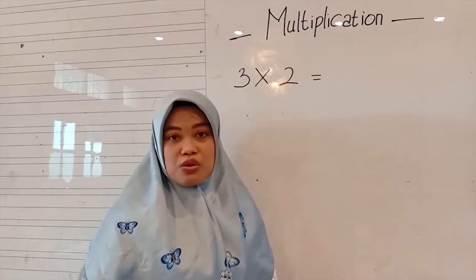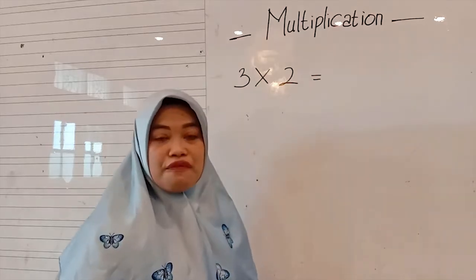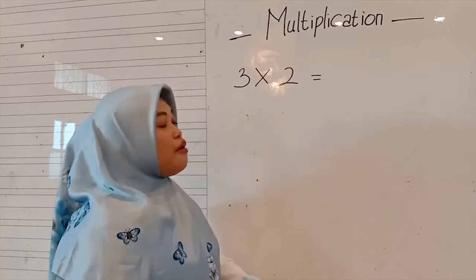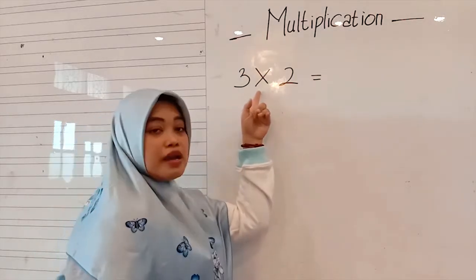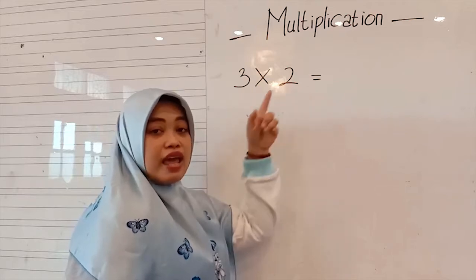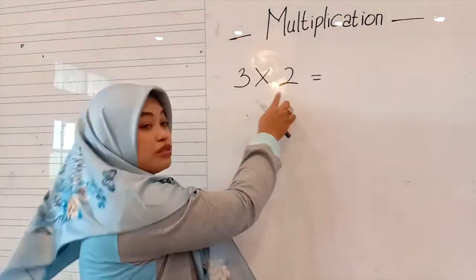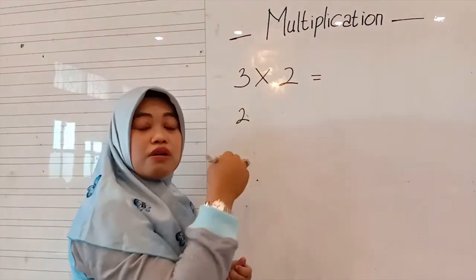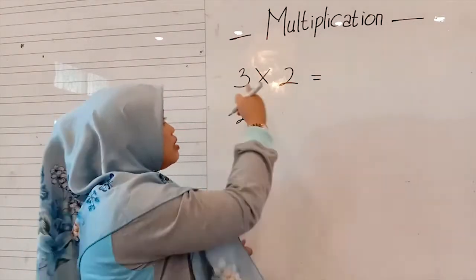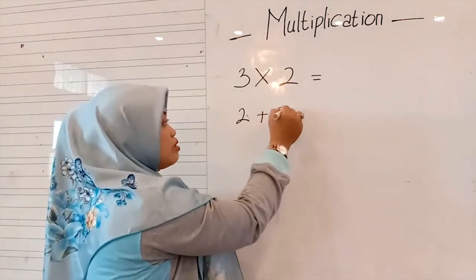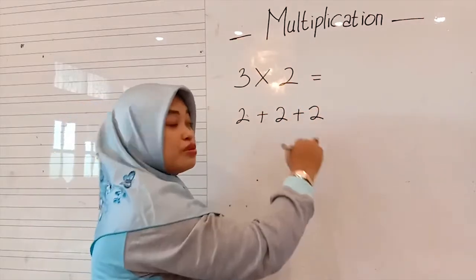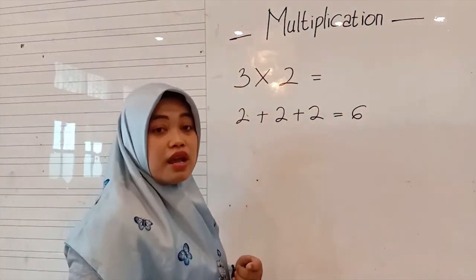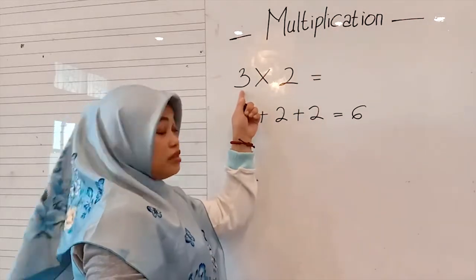Let me give you an example one by one. For repeated addition, for example, three times two is equivalent to: we write it as two plus two plus two, which equals six. Because three times two, the result is six.